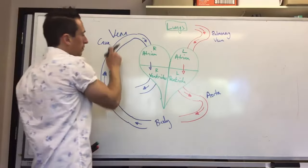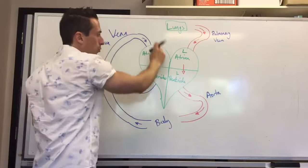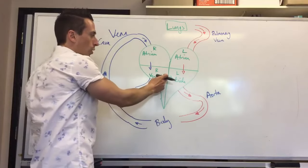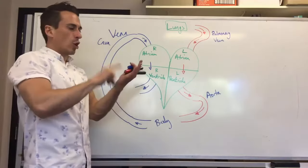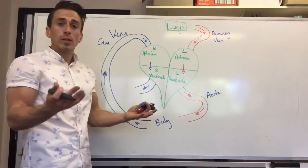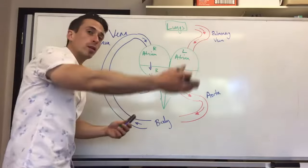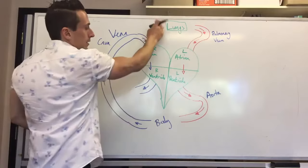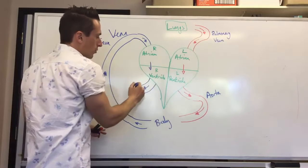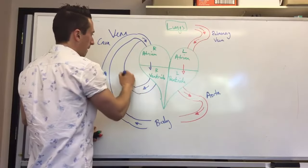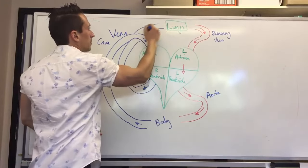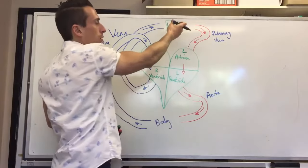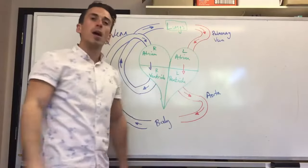Once this deoxygenated blood returns via the vena cava to the right atrium, the right atrium contracts and pushes blood to the right ventricle. The right ventricle has blood with no oxygen but with CO2 — that's pointless for our tissues. We need to get rid of the CO2 and bring oxygen into the blood, so we send it to the lungs. When the right ventricle contracts, it brings this blood up and sends it to the lungs, where it gives away carbon dioxide and takes on oxygen. Then the whole pathway begins again.